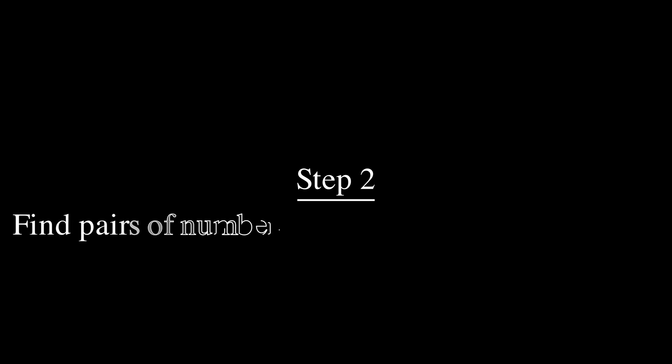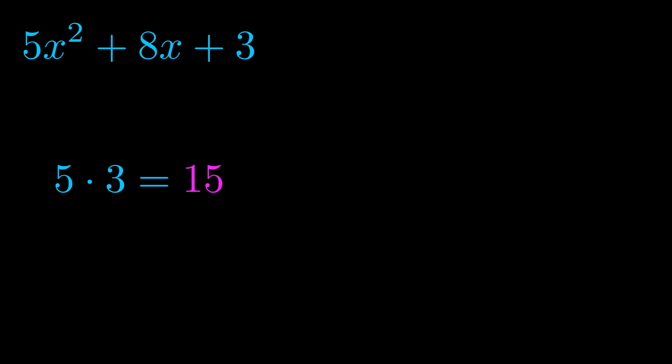Step two is to try to find all of the pairs which multiply to this number. Now it turns out you don't really need to find all of them but go ahead and write down as many numbers as you can that multiply to the magenta value for now. Pause the video and resume when you're ready to continue.